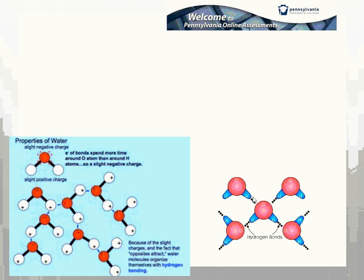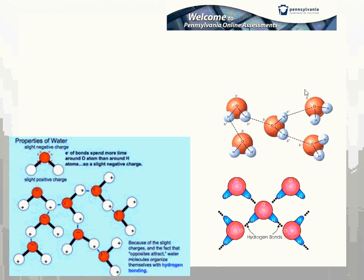Hydrogen bonds are represented by dashed lines to indicate they're weak. But if you're thinking about a whole beaker of water or an entire strand of DNA, they build in strength due to their sheer numbers. You can have more than one hydrogen bond forming between water molecules.